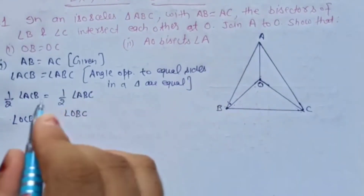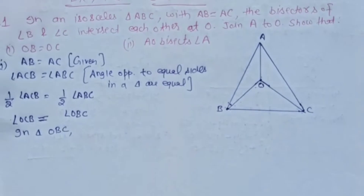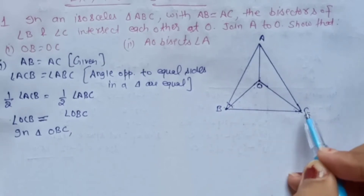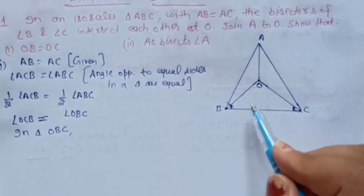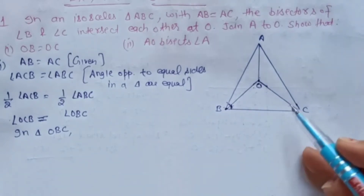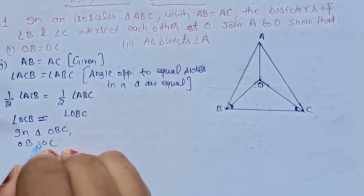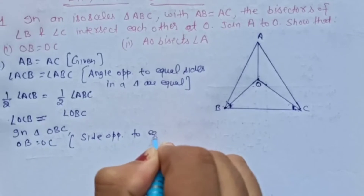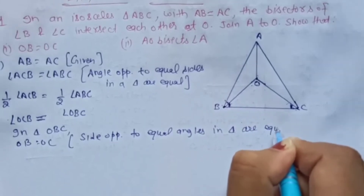To kaun si triangle lenge hum? Triangle OBC lenge. In triangle OBC, agar angle OCB equal to angle OBC hain, to inke opposite sides equal ho jayengi. Angle OCB ke opposite side OB hai, aur angle OBC ke opposite side OC hai. So OB is equal to OC. Reason: sides opposite to equal angles in a triangle are equal.